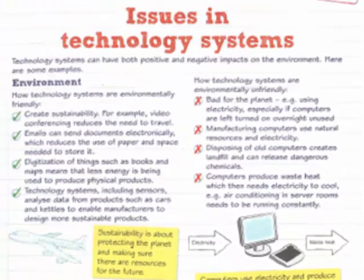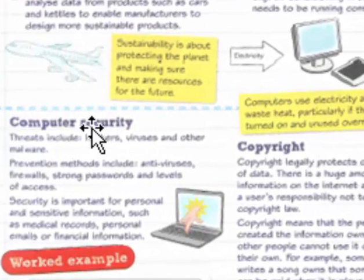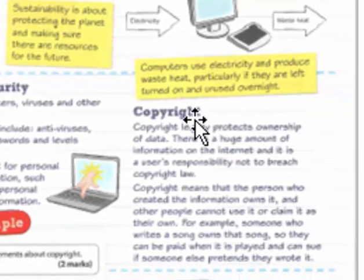And then you should have learned something about issues in technology systems — means issues in using technology systems. When you use them, you have a security issue because electronic systems could be hacked and could cause problems to data. Therefore, you have to think about data security as well as the security of the system. Then you have a copyright issue, which relates to the protection of intellectual properties — that means software you use and even the product you produced using computers, because when digitized it can be transmitted and copy-pasted easily.